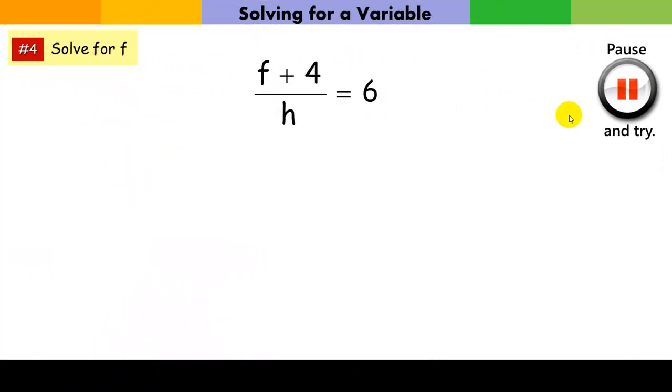Number 4. A little bit more challenging here. I want you to solve for f. Get f alone. Give it a shot. Here, now look at what we're doing here. We're saying f plus 4. And that whole thing is being divided by h. And that equals 6. Well, if this whole thing is being divided by h, I'm going to multiply everything by h. I'm clearing the fraction is what I'm doing. So when I multiply this, the h's cancel. And then when I come over here, it's going to be h times 6 or 6h.